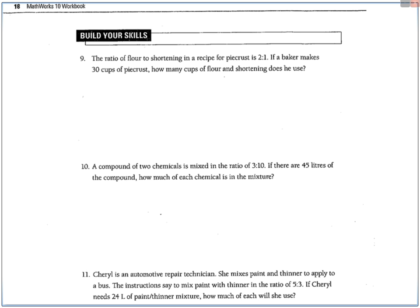Here we have the ratio of flour to shortening. Flour to shortening, so it's like flour F to shortening S is 2 to 1. If the baker makes 30 cups of pie crust, how many cups of flour and shortening does he use? So this question is a little bit different because they give you the ratio of flour to shortening, and these are the two parts that make up the whole, which is what they're calling the pie crust. So this is like a total, or the whole, which the parts make up.